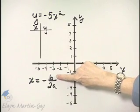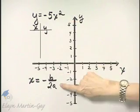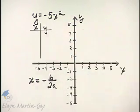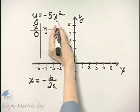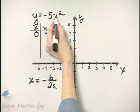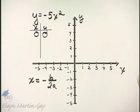b is what? b is 0, that's the coefficient of x, and a is negative 5. If you do so though, you'll have an x value of 0 and once you plug in that x value of 0, you get a y value of 0.